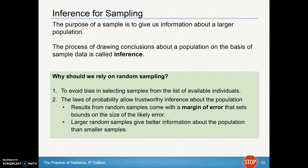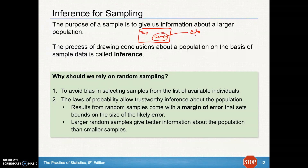The purpose of a sample is to give us information about a larger population. We have our population out there and we take a sample of it. The process of drawing conclusions about a population on the basis of sample data is called inference. When I collect data from that sample, what I'm hoping to do is use that data to make conclusions about the population — that's inference.